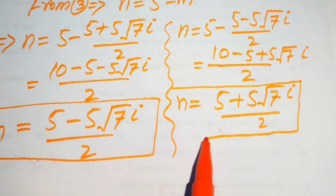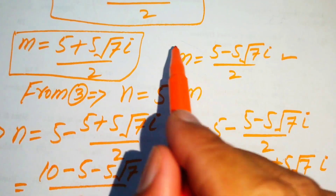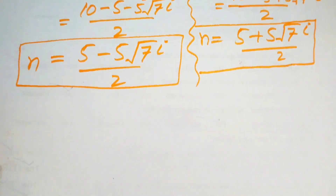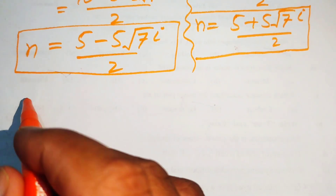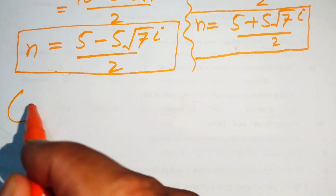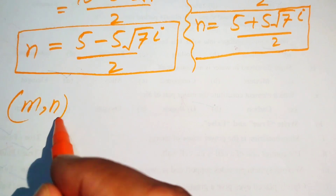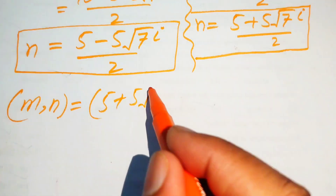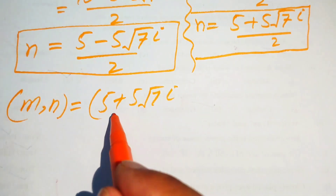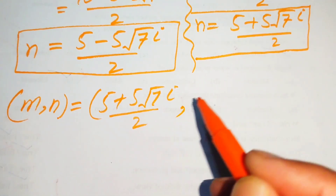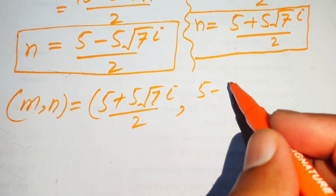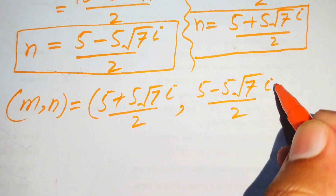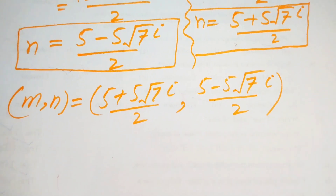So we have two solutions. The first solution is: m equals (5 plus 5√7·i) divided by 2, and the corresponding n equals (5 minus 5√7·i) divided by 2.